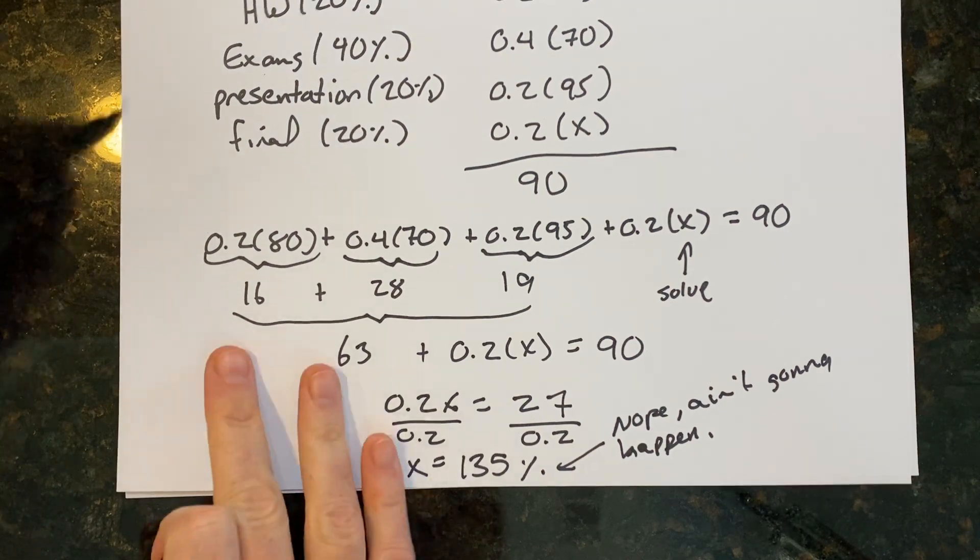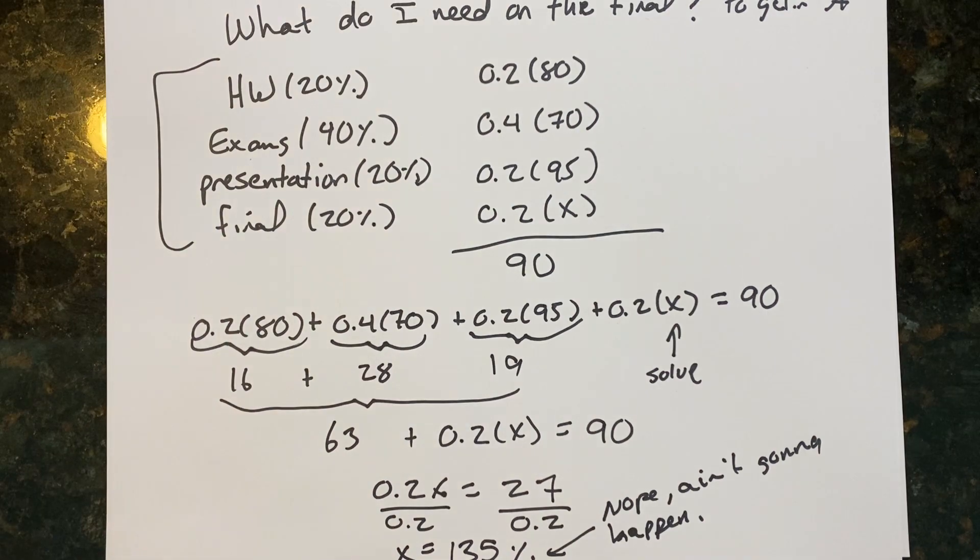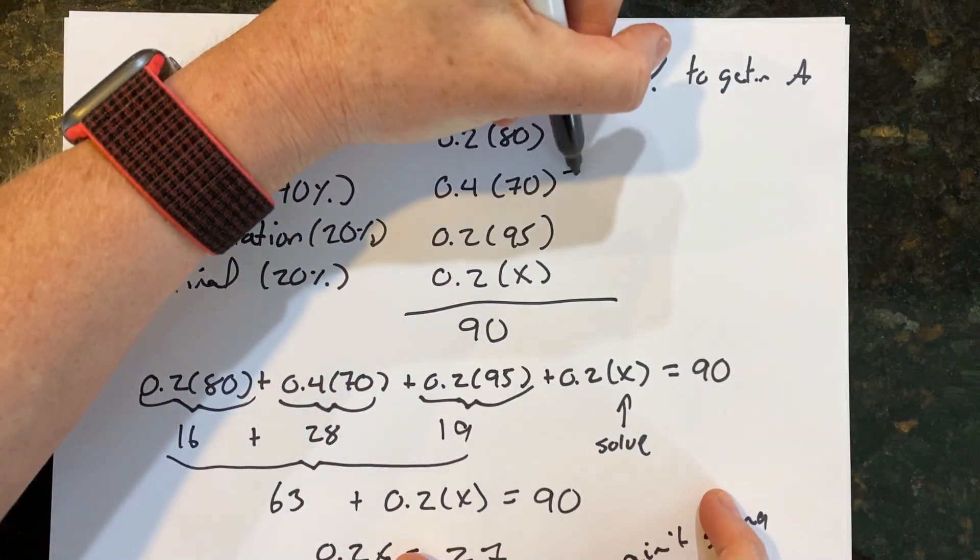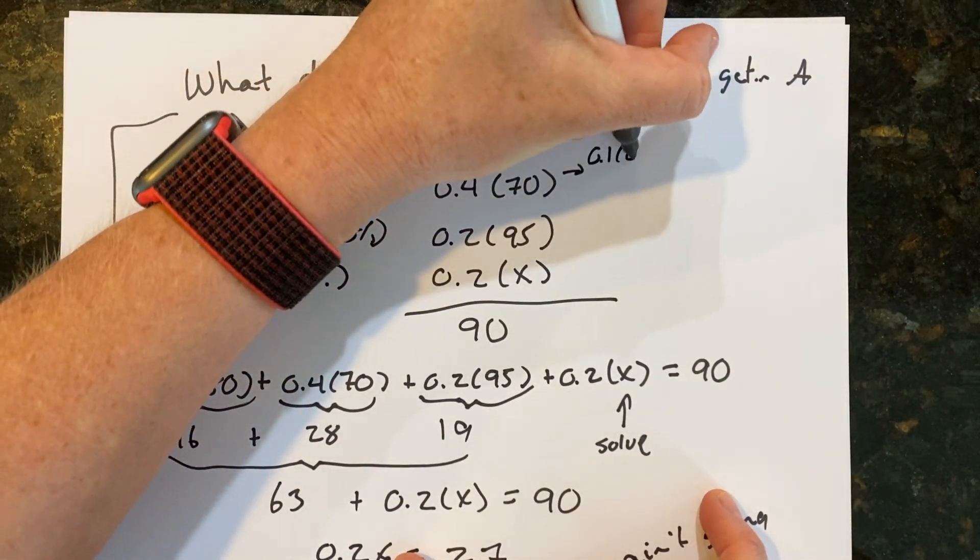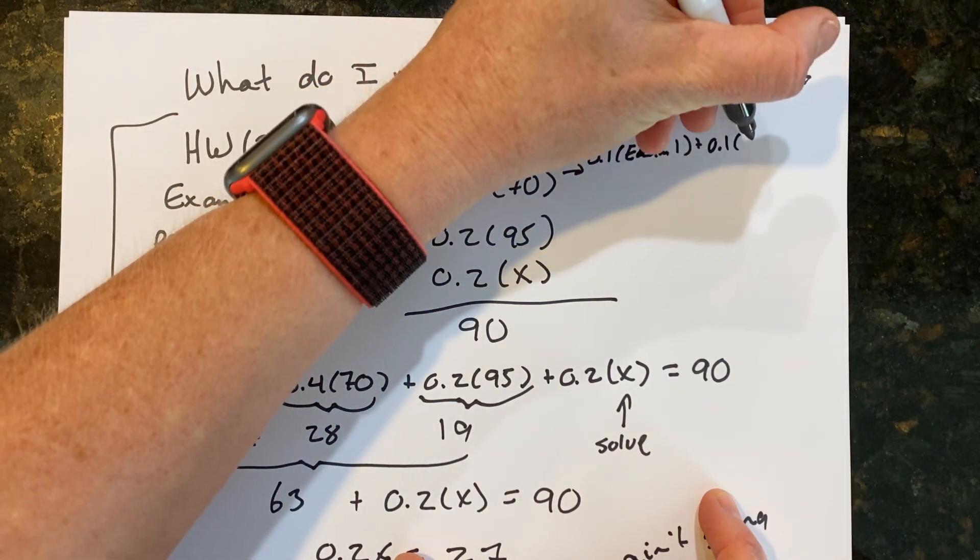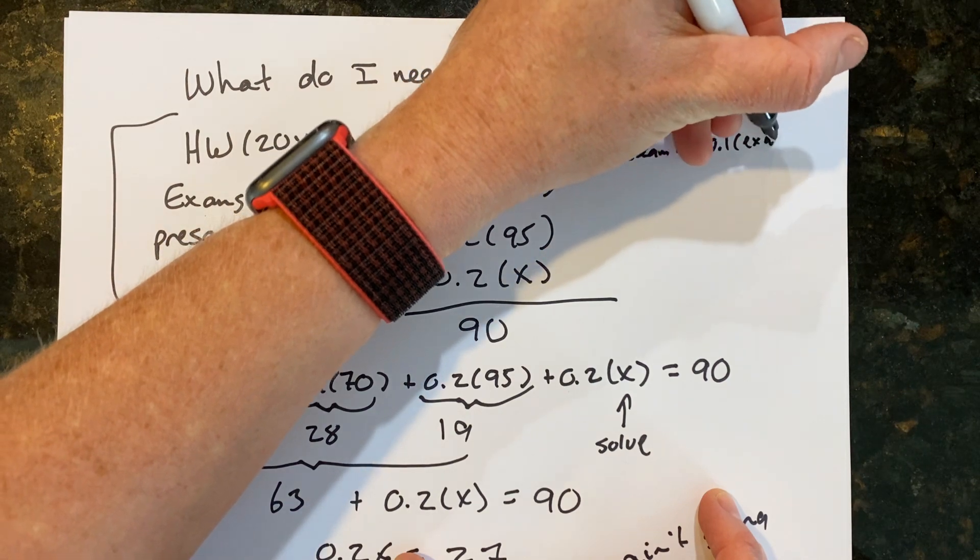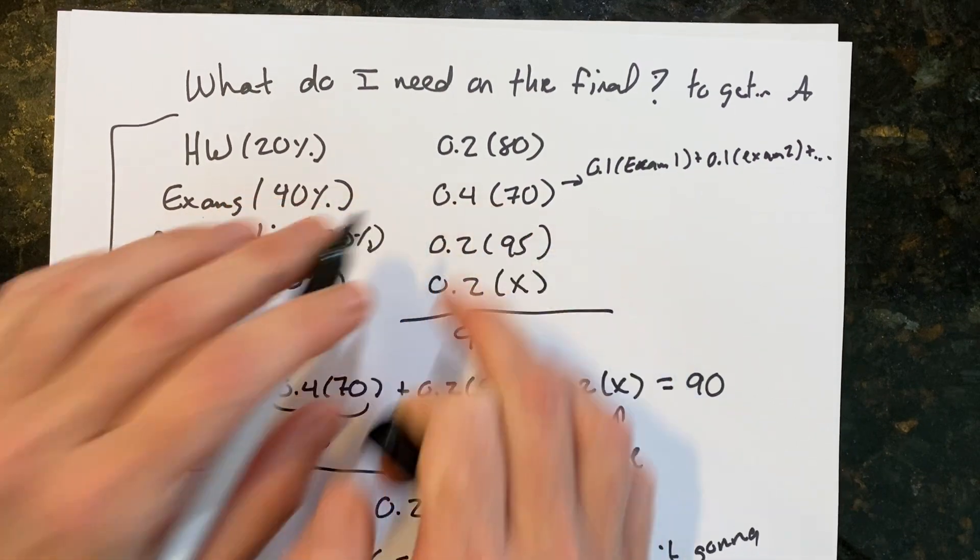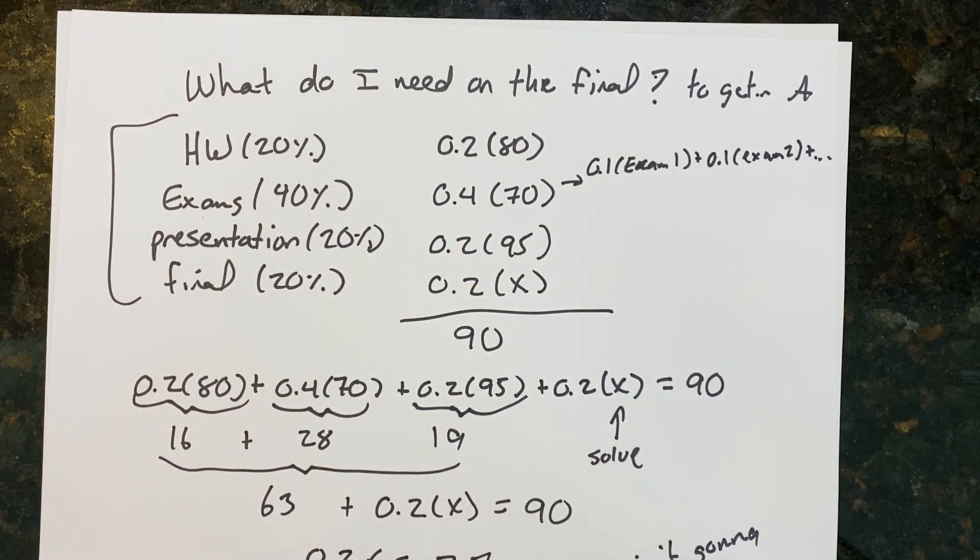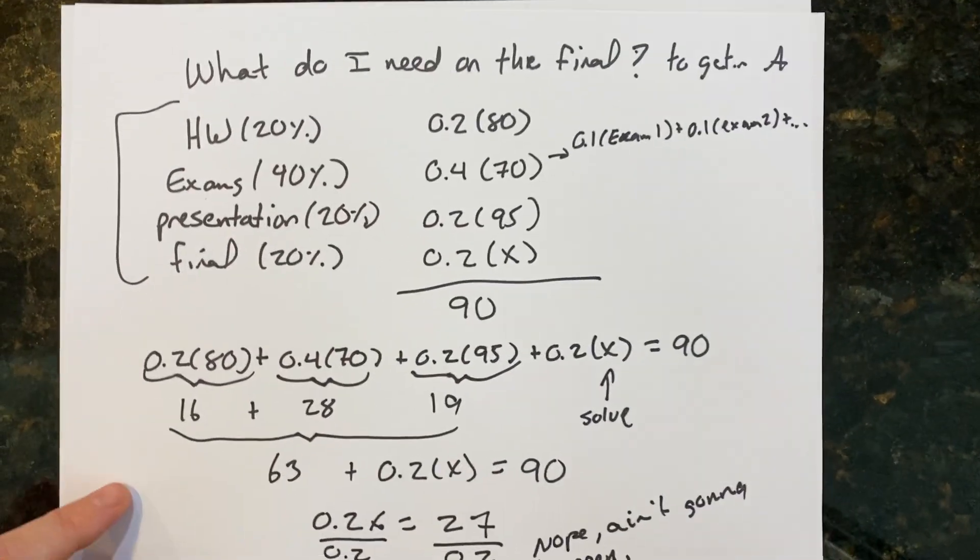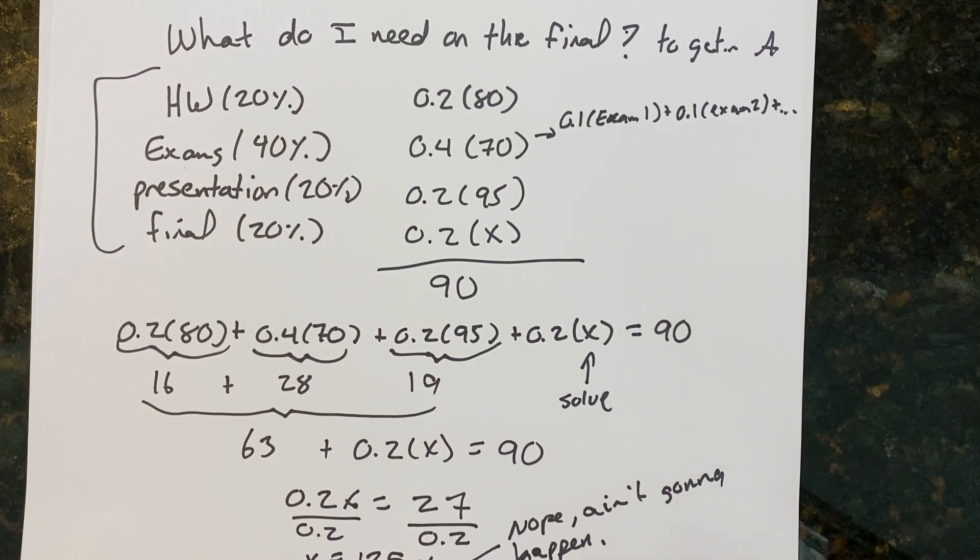So I hope this helps. You can use it for any class. Just make sure that you use the appropriate percents. And yeah, when I earlier talked about the exams, what I mean by that is you can space them out. You can say 0.1 times exam one, if let's say you had four exams, plus 0.1 times exam two, plus dot dot dot dot, as long as they total to equal 0.4. All right, I hope this helps and keep this video handy for the rest of your college career because don't email me. Bye!